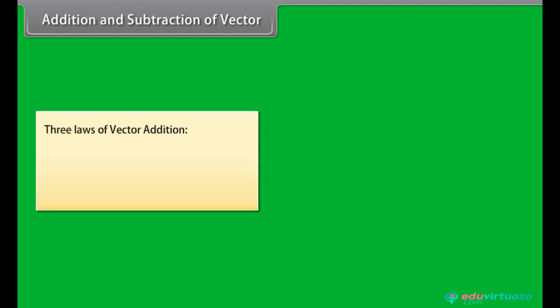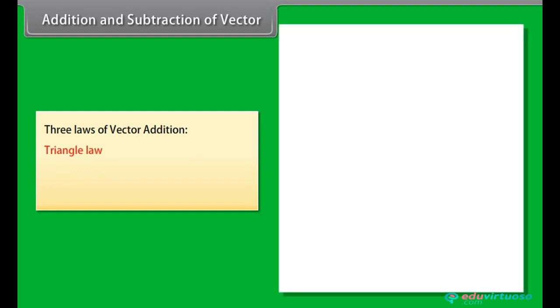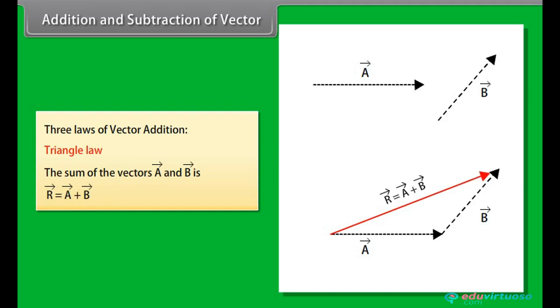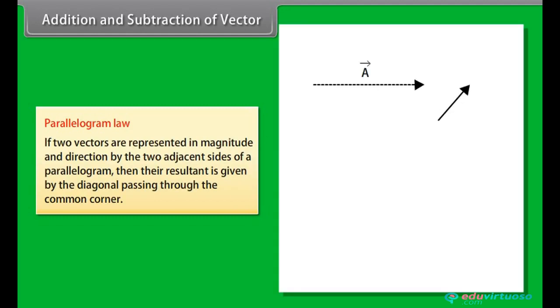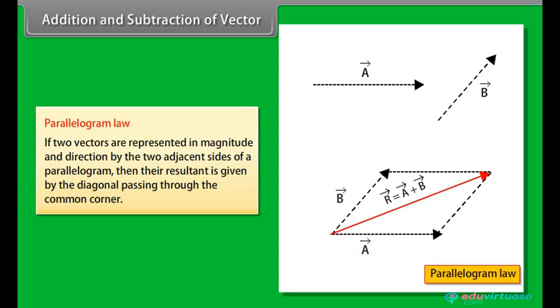Addition and subtraction of vector. Vector addition is done with the help of three laws. A. Triangle law: The sum of the vector a and vector b is R vector is equal to A vector plus B vector. B. Parallelogram law: If two vectors are represented in magnitude and direction by two adjacent sides of a parallelogram, then their resultant is given by the diagonal passing through the common corner.